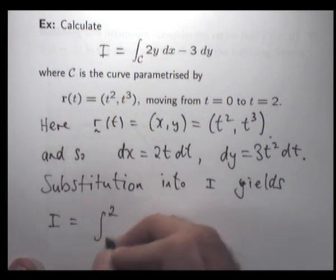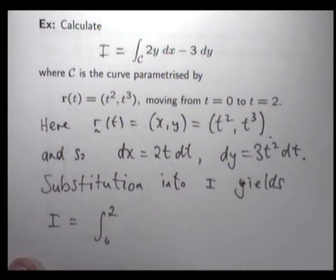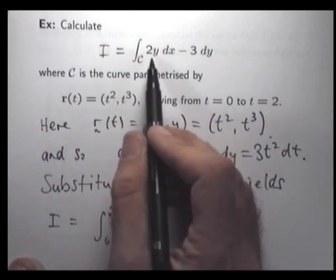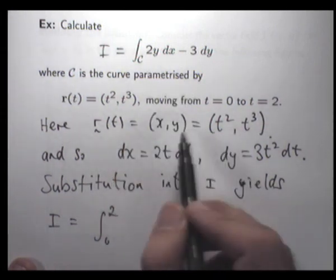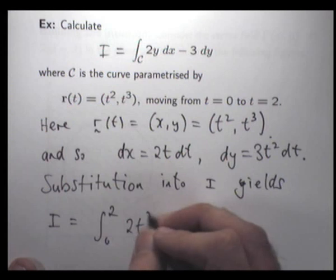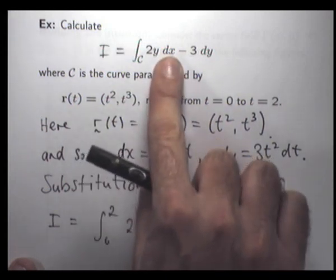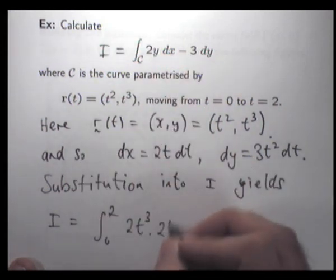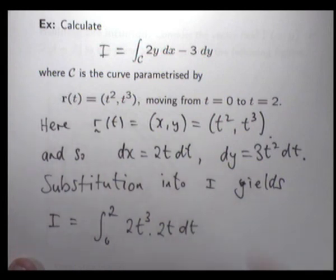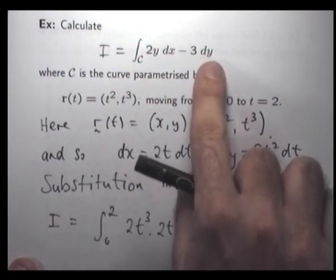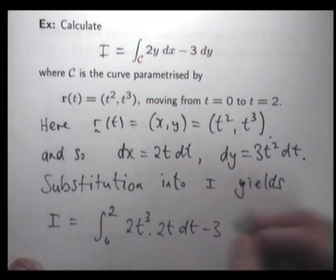So I'm going to be integrating from 0 to 2. I'm going to replace the 2y with 2 times t cubed. I'm going to replace the dx with 2t dt minus 3, I'll just leave that alone. dy is going to be replaced with 3t squared dt.